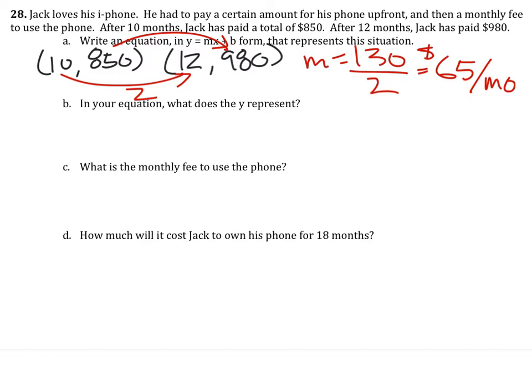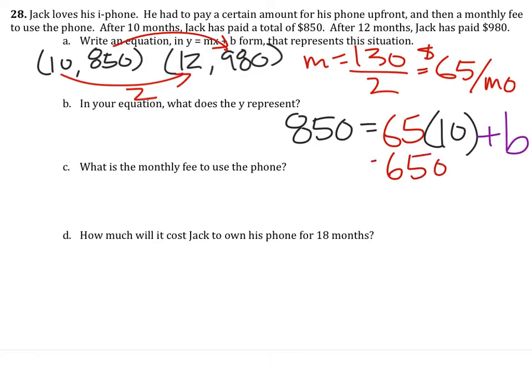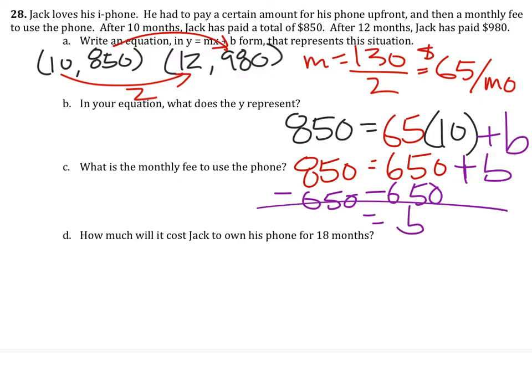So on the equation, y equals mx plus b, y is $850, equals the slope, which we know is $65, times the x value, which is 10. And this is plus b, right? So this would give us $650 right here equals $850. And that is plus b, so to solve for b, we just need to subtract $650 from both sides. And that tells us that b equals $200.